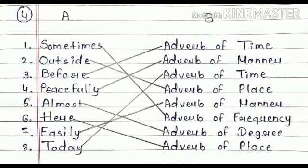Outside. So what does it suggest? It suggests a place. So it will come adverb of place. Third one is before. Before is adverb of time, so you have to match adverb of time with adverb of time.